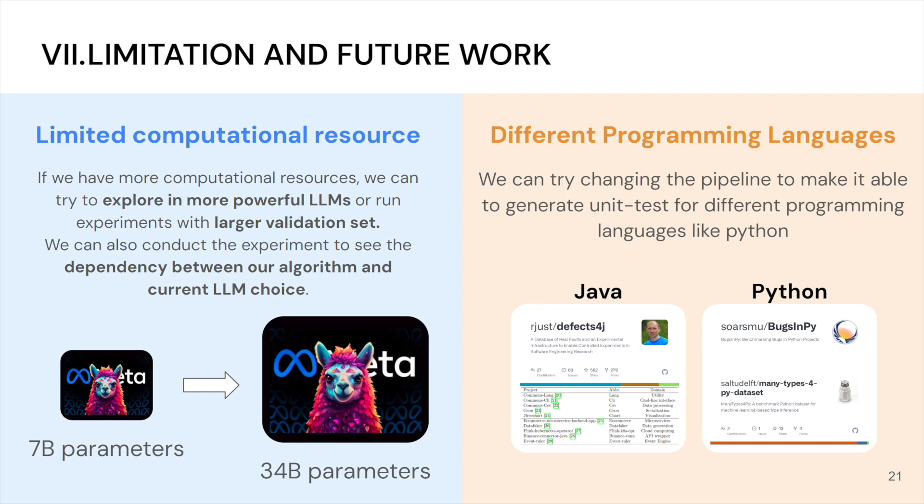The current validation set is actually only 16 methods. So, it's kind of like a small set and maybe there's noise in terms of evaluation with the fitness. We can also conduct experiments to see the dependency between our algorithm and the current large language model choice.